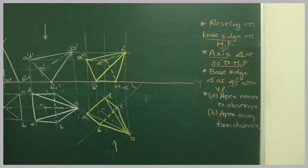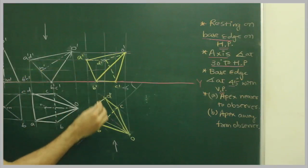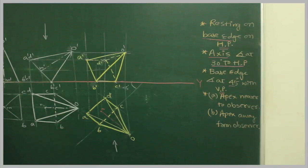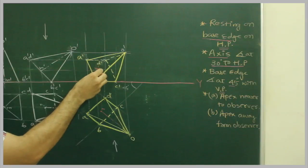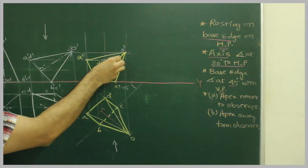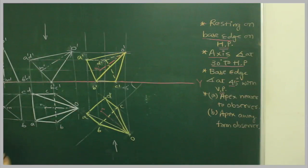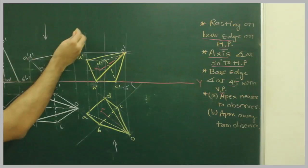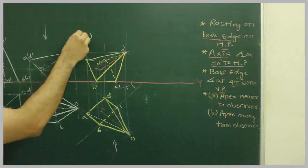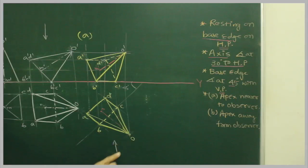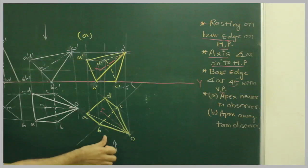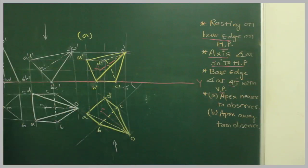We project M to get M-dash from here, and we can draw the axis also. So we are done with Part A — that is, the base edge inclined at 45 degrees when the apex is nearer to the observer. This is the apex, and the observer is seen from this direction, so it is nearer to the observer.